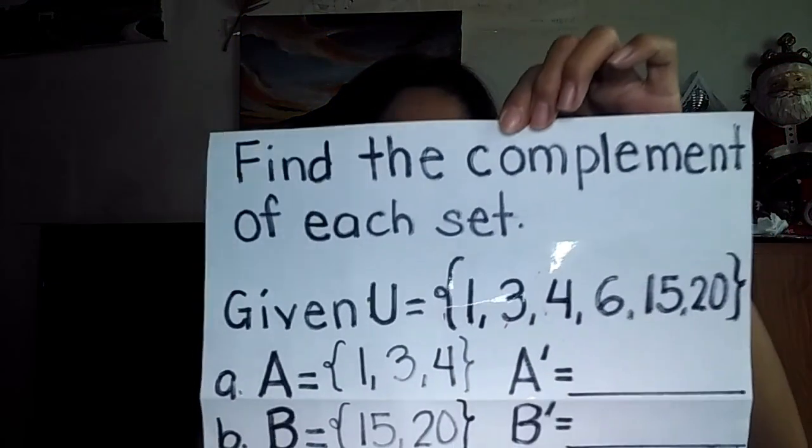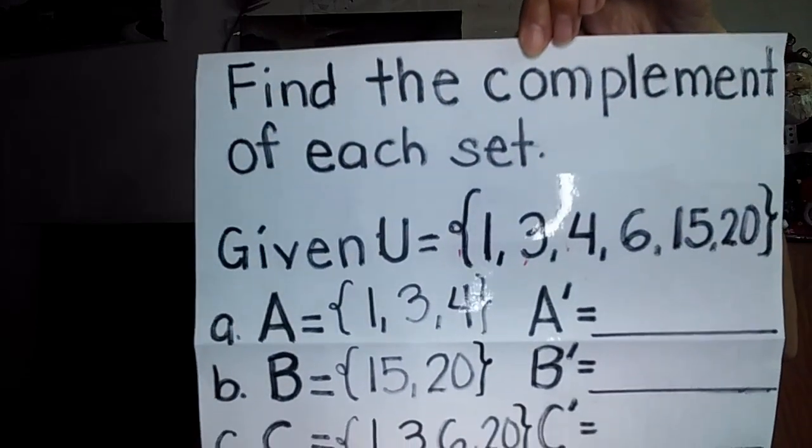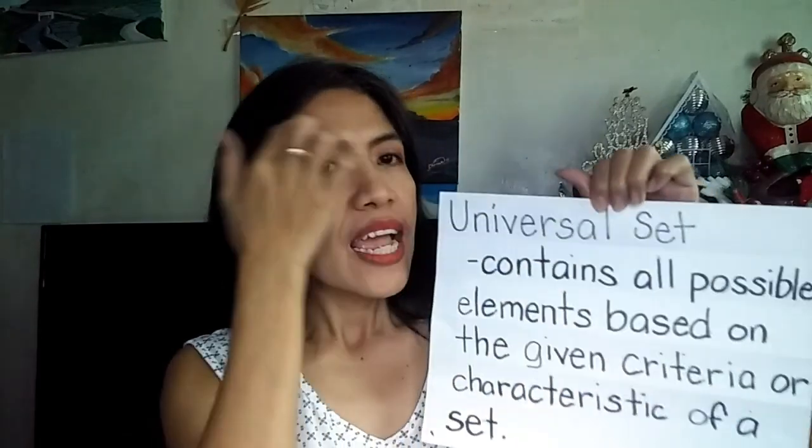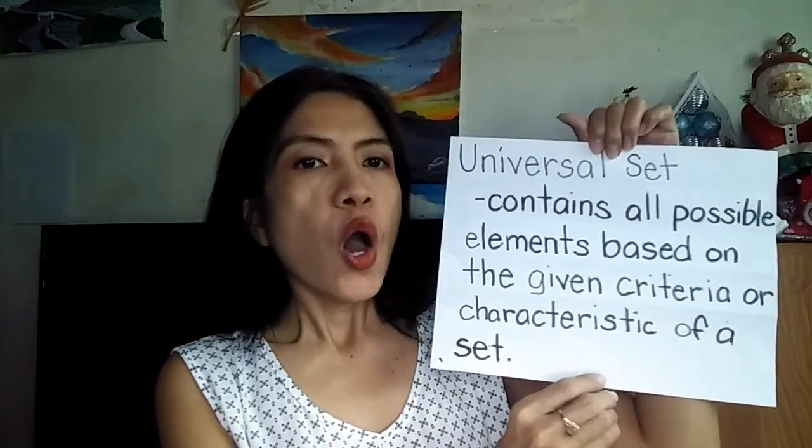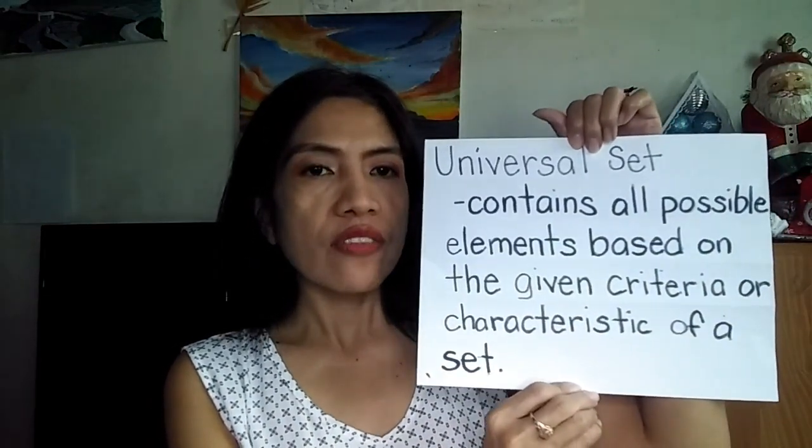Today, this is Teacher Eye, and today I am going to share with you how to get the complement in each set. So if you are given this problem — find the complement of its set — how to answer it. So first, let's go to the definition of universal set. The universal set contains all the possible elements based on the given criteria or characteristics of the set.